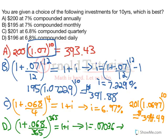Plug this back in starting at $196. 1.07036 to the power of 10. And that equals $386.86.